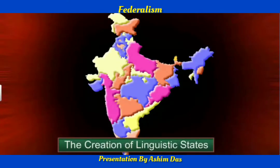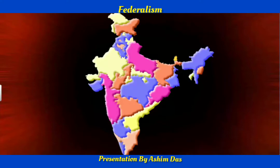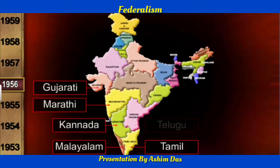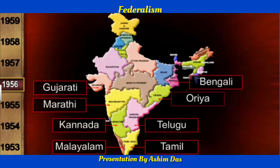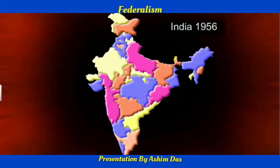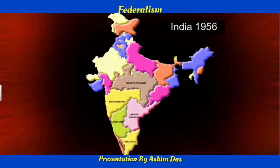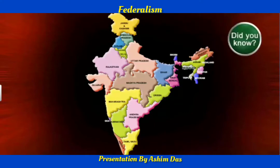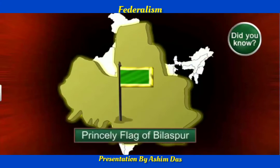At the time of independence in 1947, there were many states that had more than one local language. However, in 1956, under the State Reorganization Commission, states were created on the basis of language. During this time, many small states disappeared and new ones came into existence. For example, Bilaspur was an independent state till 1954, after which it was merged as a district in the state of Himachal Pradesh.